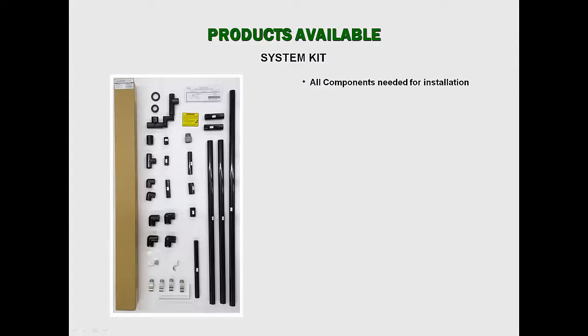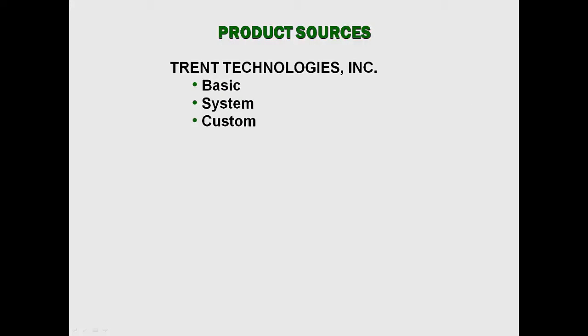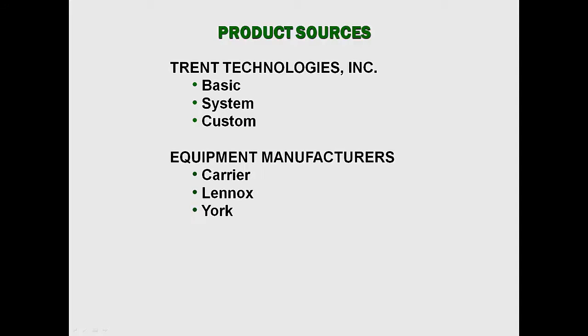System kits include all components for installation, and are available for over 500 Carrier, Trane, Lennox, and York rooftop models up to 30 tons, with drain pan pressures to negative one and one-half inches of water column, and are available in three-quarter inch, one-inch, and one-and-a-half inch drain sizes. All CostGuard condensate drain seal kits are available directly from Trent Technologies. System kits for unitary rooftop units are also available from three major equipment manufacturers who make provisions for easy installation and/or ship the appropriate kit with their equipment.